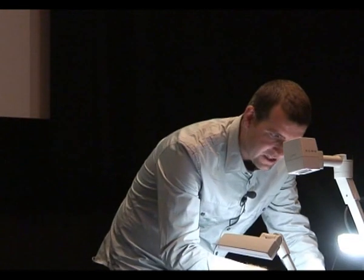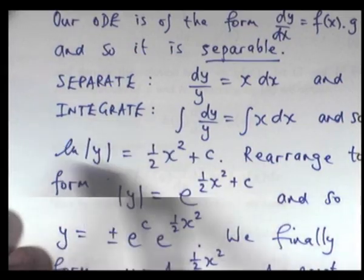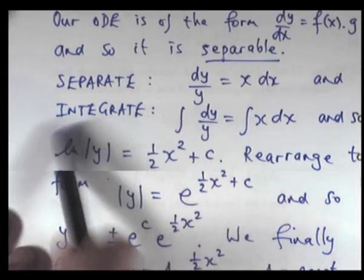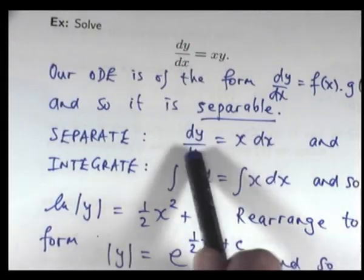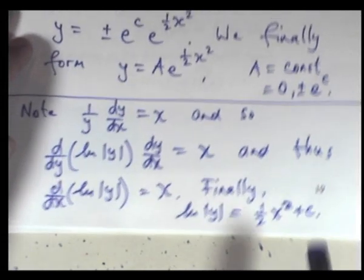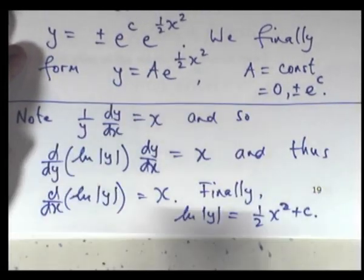So, we integrate, we get log y equals a half x squared plus c. Alright, so, if we look back to our solution up here, this is exactly what we came up with. Alright, but we didn't spend a lot of time messing around with this. We just separated the variables and integrated.